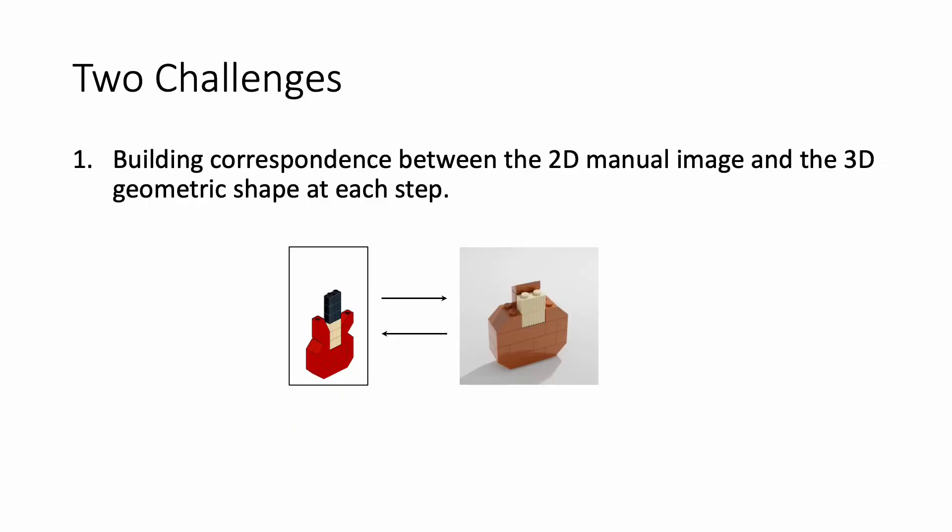There are two challenges in translating LEGO manuals into executable plans. The first one is how to build correspondence between the 3D geometric shape at each step and the 2D manual image. Since the manual image is just a 2D projection of the target shape, the inference algorithm needs to reason about the 3D orientations and alignments of components throughout the assembly process.